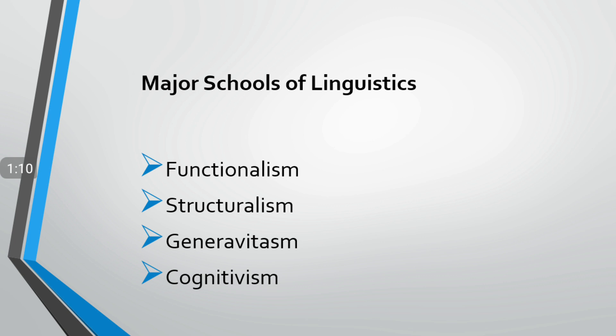As we know, linguistics is the scientific study of language, and we need to understand the scientific basis. With the help of those bases, we can understand the structures, the functions, and we can explore the underlying systems in the human brain which help in processing language. We have many schools of linguistics. Here we will discuss functionalism, structuralism, generativism, and cognitivism. But this video will be about structuralism.